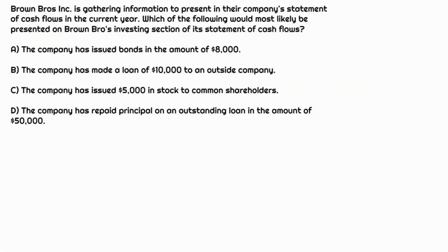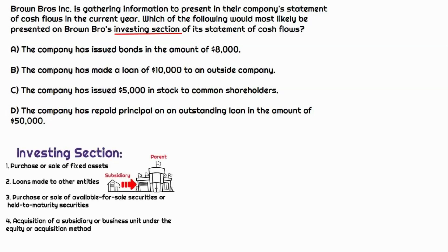Brown Bros. is preparing their cash flow statement for the current year, specifically focused on the investing section. The question asks which of the following would be most likely included in the investing section. Don't skip through and just pick one that looks like investing — go through all four, classify them, and confirm which is the only one going to investing.